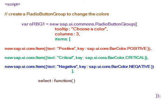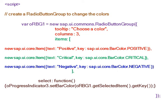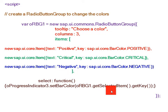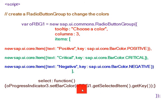We use the select event, where we write a function so that the progress indicator bar color changes dynamically when the user selects any item in the radio button group.